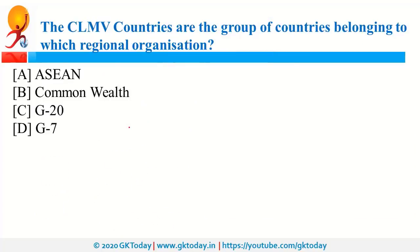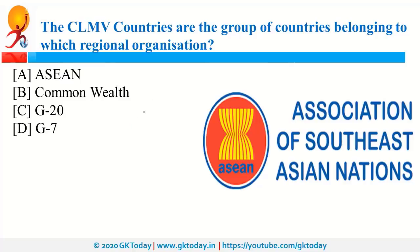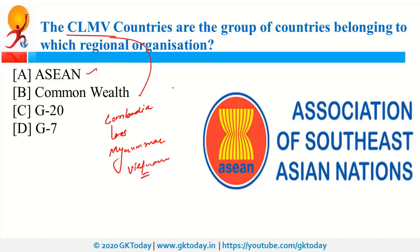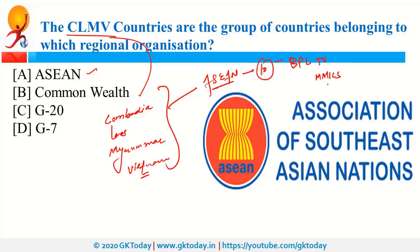The CLMV countries are a group of countries belonging to ASEAN, that is Association of Southeast Asian Nations. CLMV stands for Cambodia, Laos, Myanmar, and Vietnam — all four countries are part of ASEAN. ASEAN is a grouping of 10 countries. For this year, Vietnam is the chair of ASEAN.